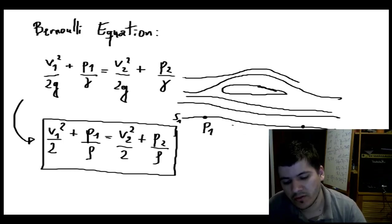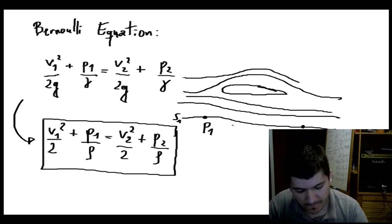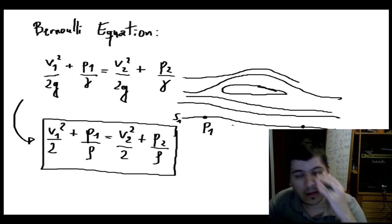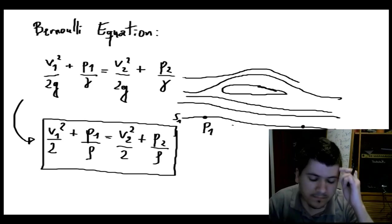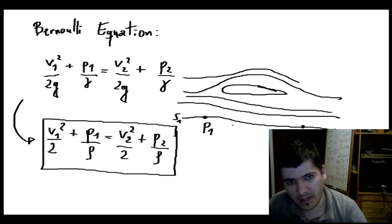We can apply the Bernoulli equation for these two points here because they are on the same streamline. So, to summarize, for the Bernoulli equation to be applied, we have to be dealing with incompressible, steady—but it can be unsteady flow but not in this form—and frictionless flow.